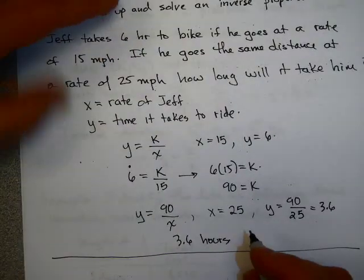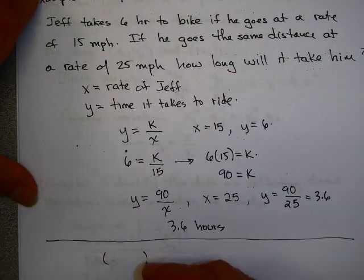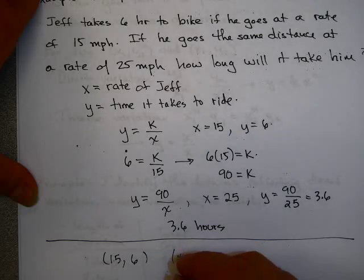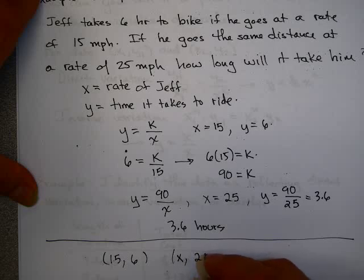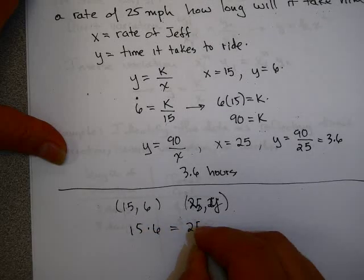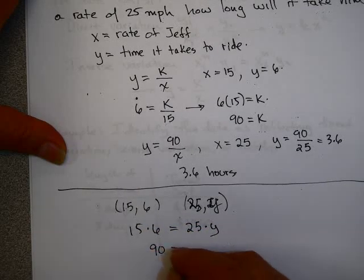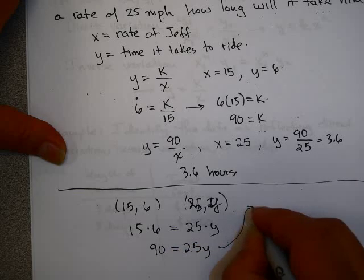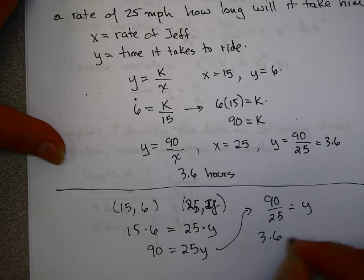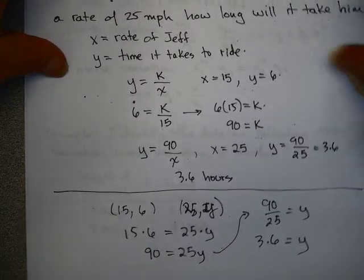Alternatively, using ordered pairs: when he goes 15 miles per hour it takes 6 hours, and when he goes 25 miles per hour it takes y hours. Using x1 times y1 equals x2 times y2: 15 times 6 equals 25 times y, giving 90 equals 25y, so y equals 90 over 25 equals 3.6. Either way, you can solve inverse proportions.